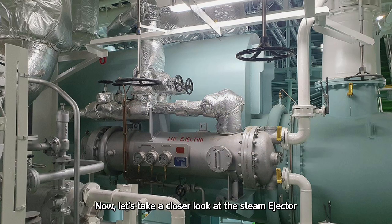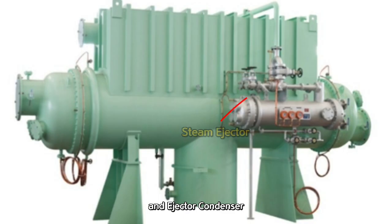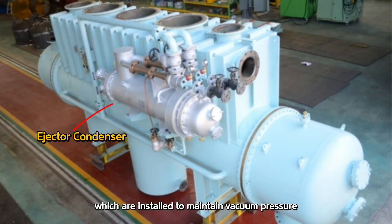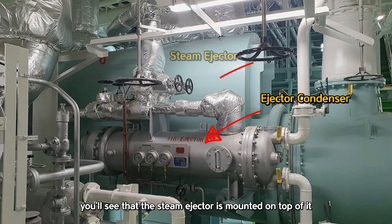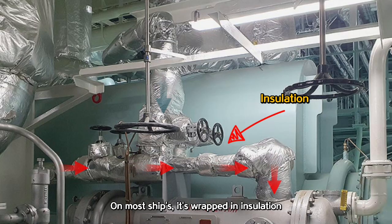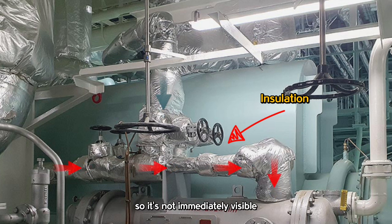Now, let's take a closer look at the steam ejector and ejector condenser, which are installed to maintain vacuum pressure. If you look at the small-sized ejector condenser, you'll see the steam ejector is mounted on top of it. On most ships, it's wrapped in insulation, so it's not immediately visible.